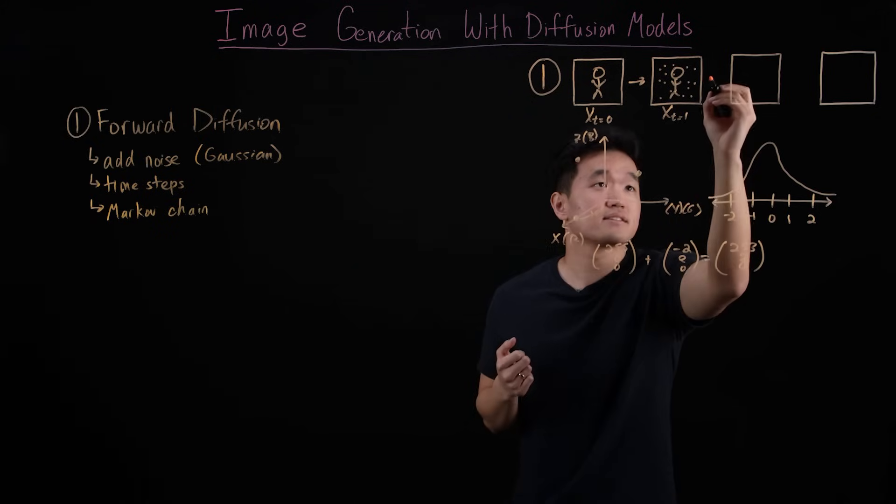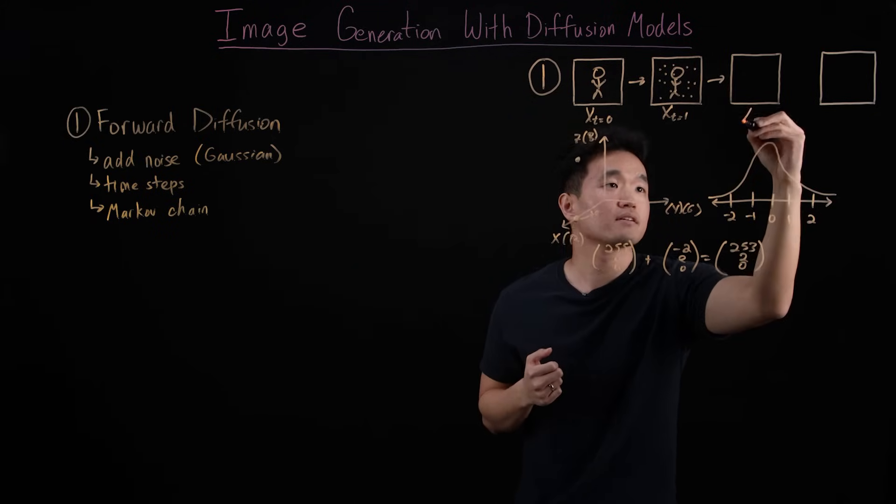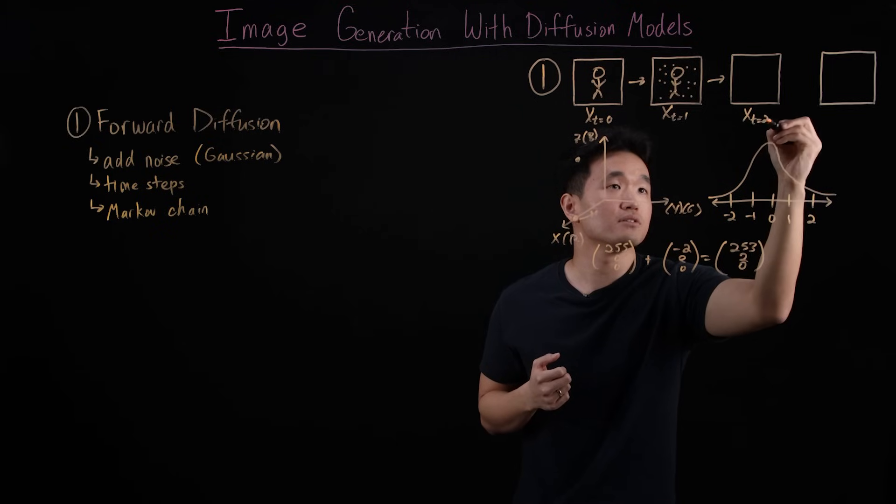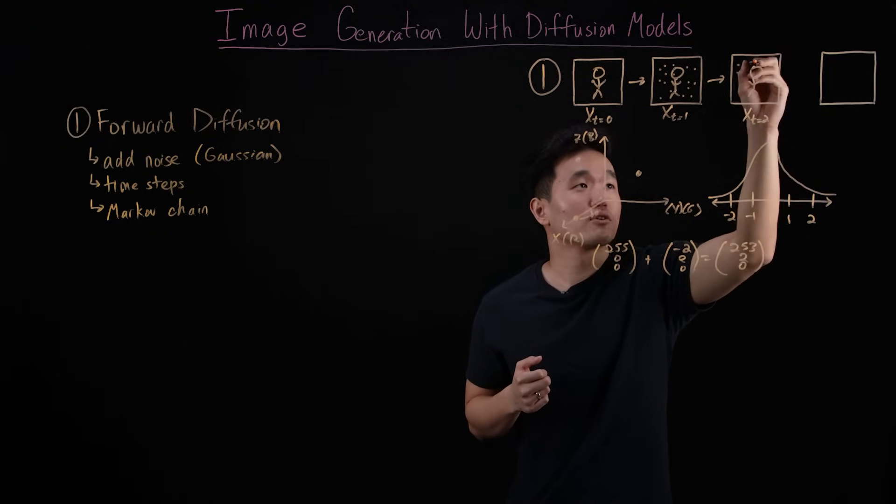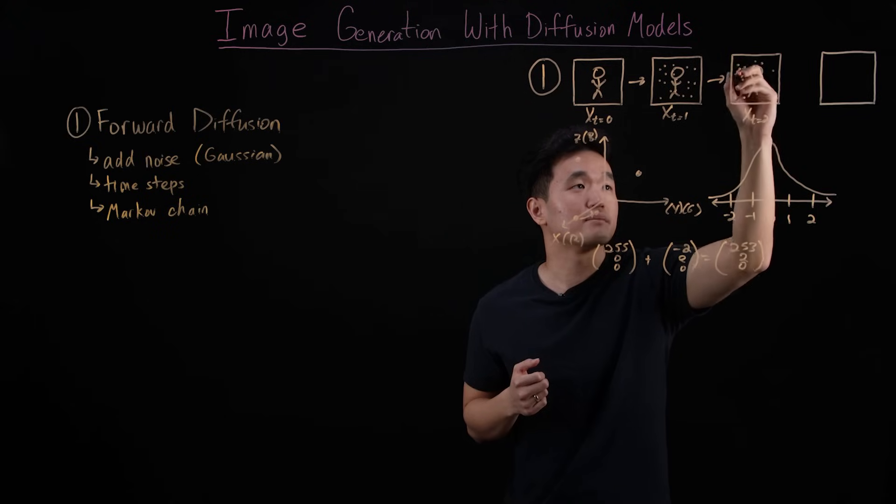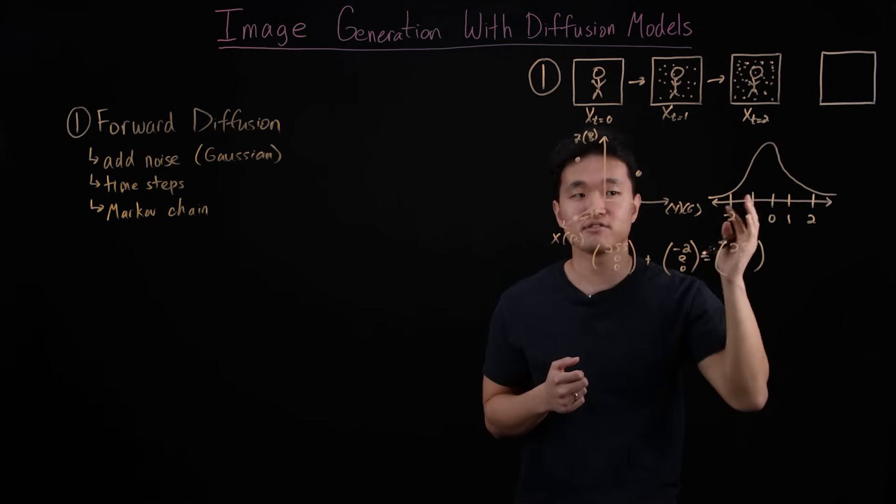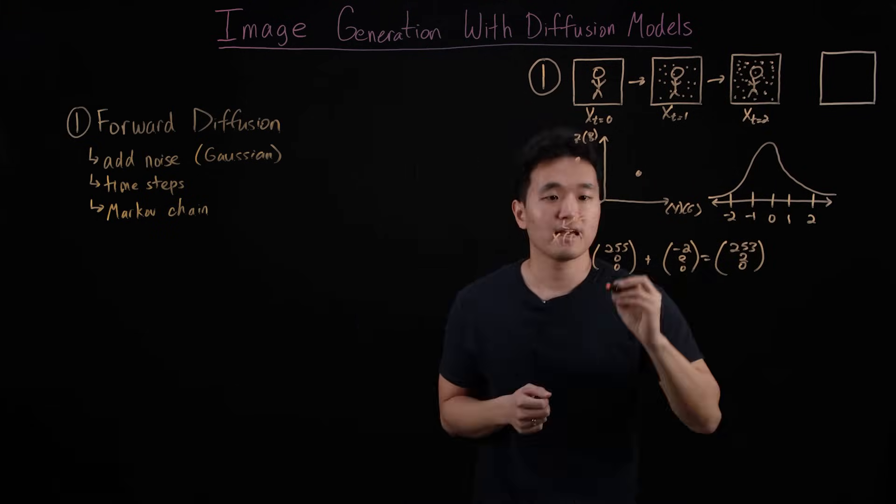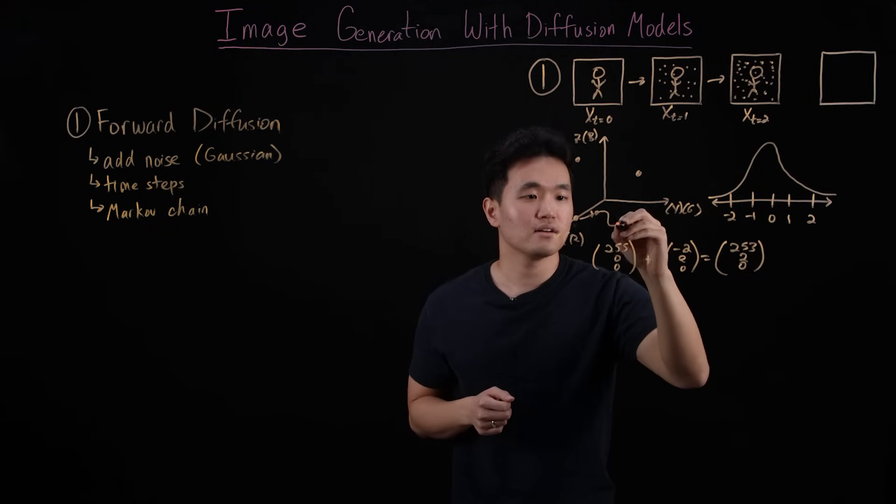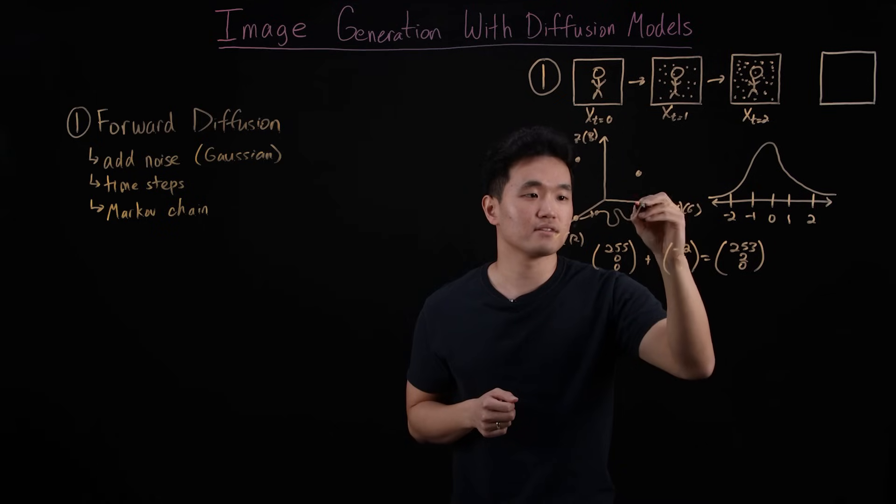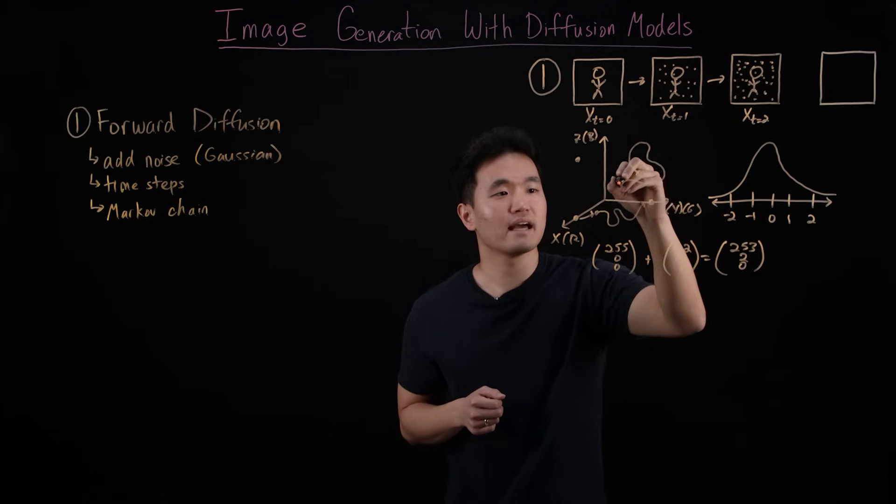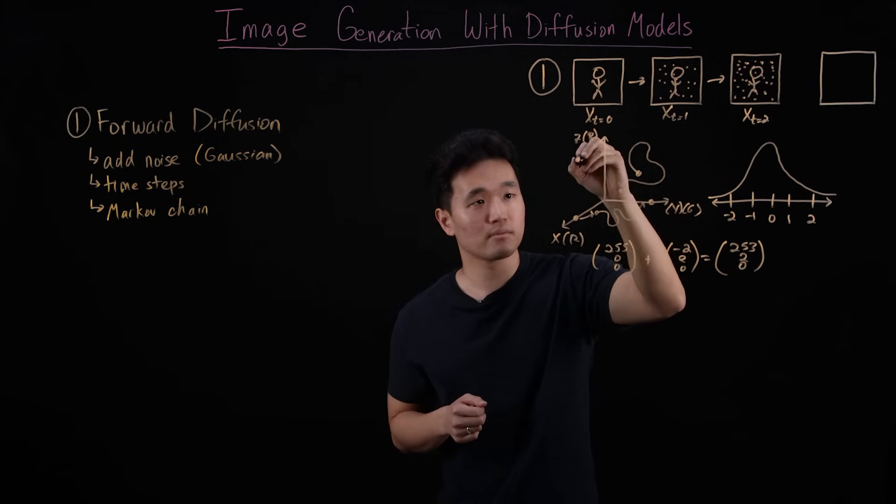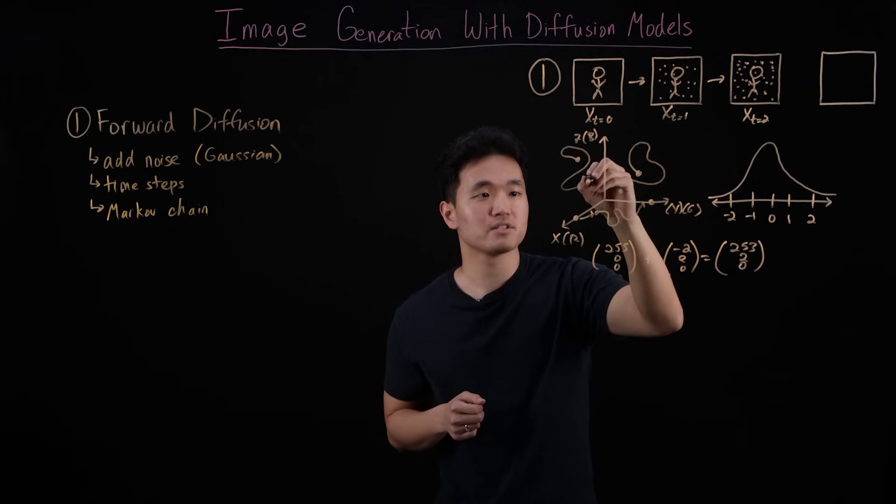So if we continue this process, so on and so forth, say we go to time step two, adding more and more random Gaussian noise to our image. Again, by randomly sampling values from our Gaussian distribution, and using it to randomly adjust the color values of each of our pixels, gradually destroying any order or form or structure that can be found in the image.